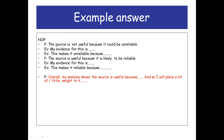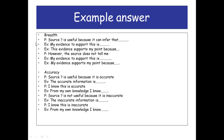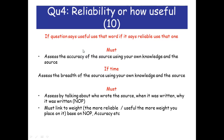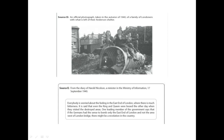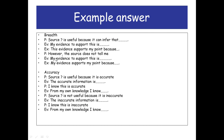There are two parts to the breadth — the positive and negative sides. For the positive: point-evidence-explain, it is useful because. For the negative: point-evidence-explain, it isn't useful because. The source does not tell us what's going on in the countryside during the Blitz or that it is a safe place. My evidence: the picture only shows destruction in London. Then explain your point and take it from there.